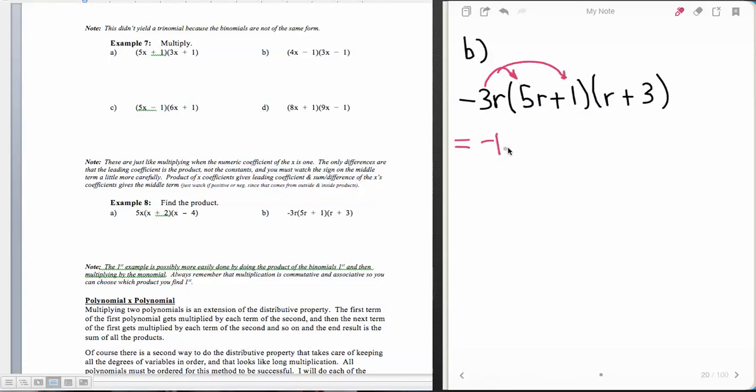So negative times a positive is negative 15r and then plus negative times a positive is negative 3r. And now I have this binomial times this binomial. The only thing you want to be careful about when multiplying the monomials through the binomial is that you don't try to multiply it clear through over here, because remember multiplication is not commutative over multiplication. It's associative.